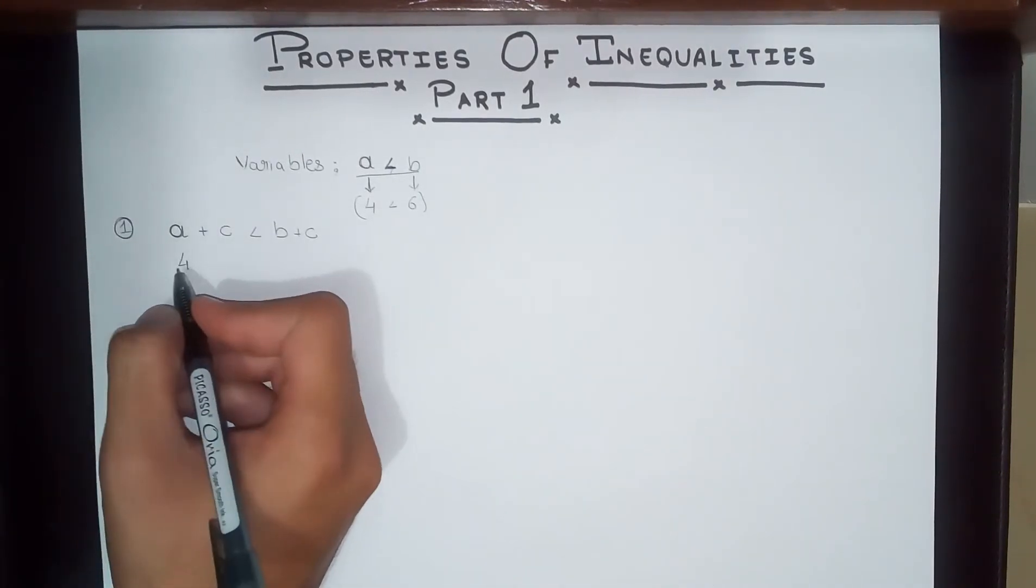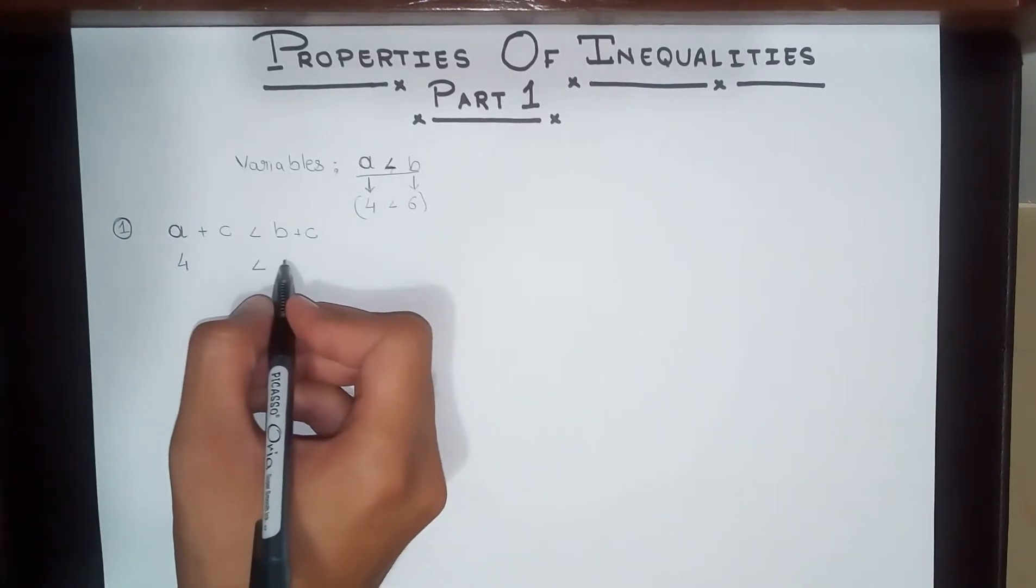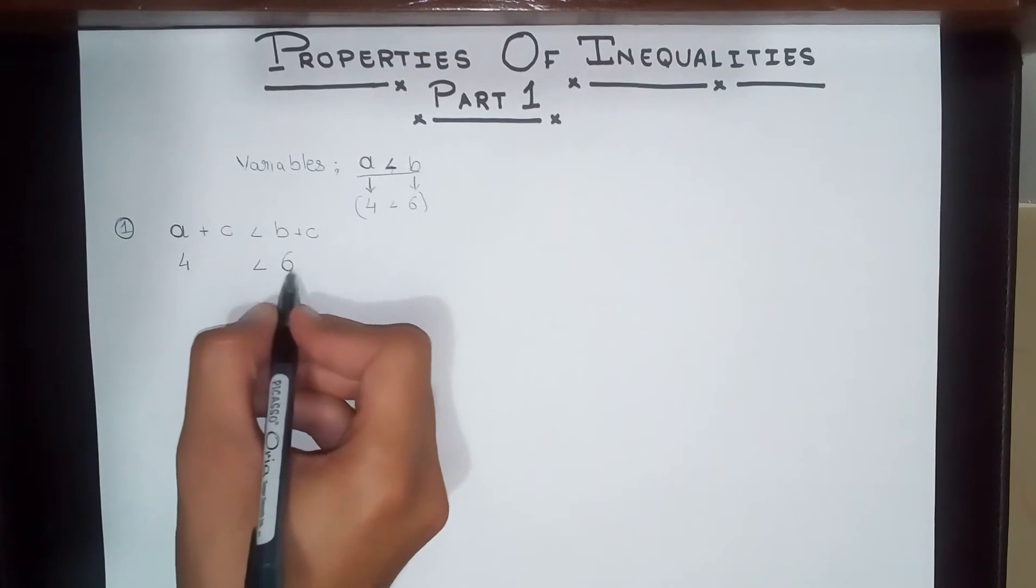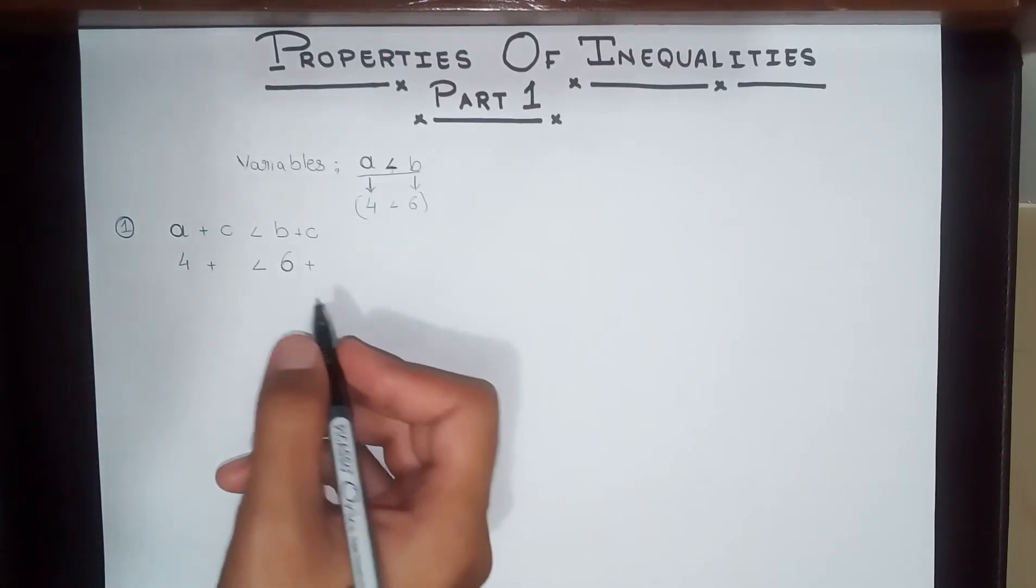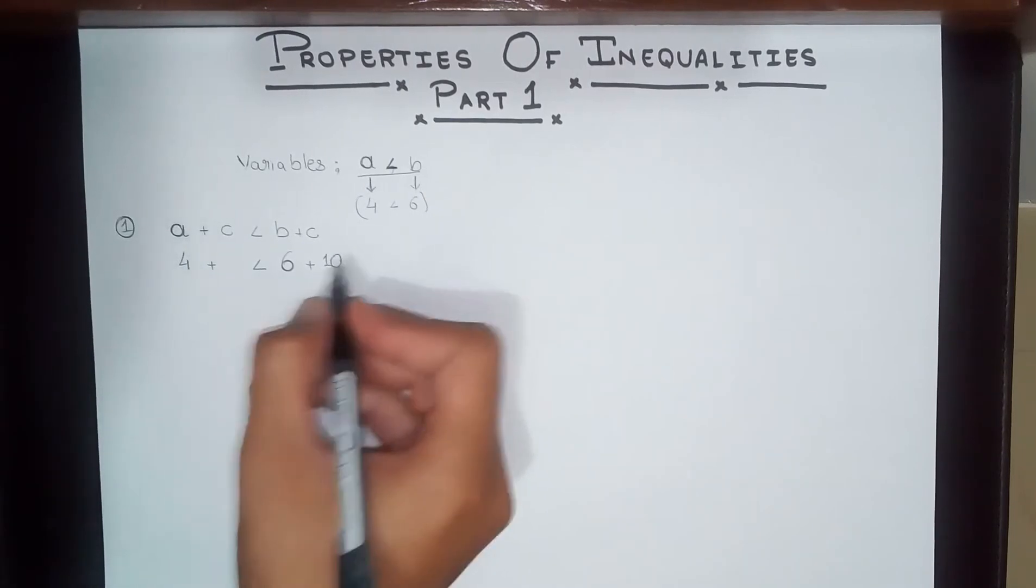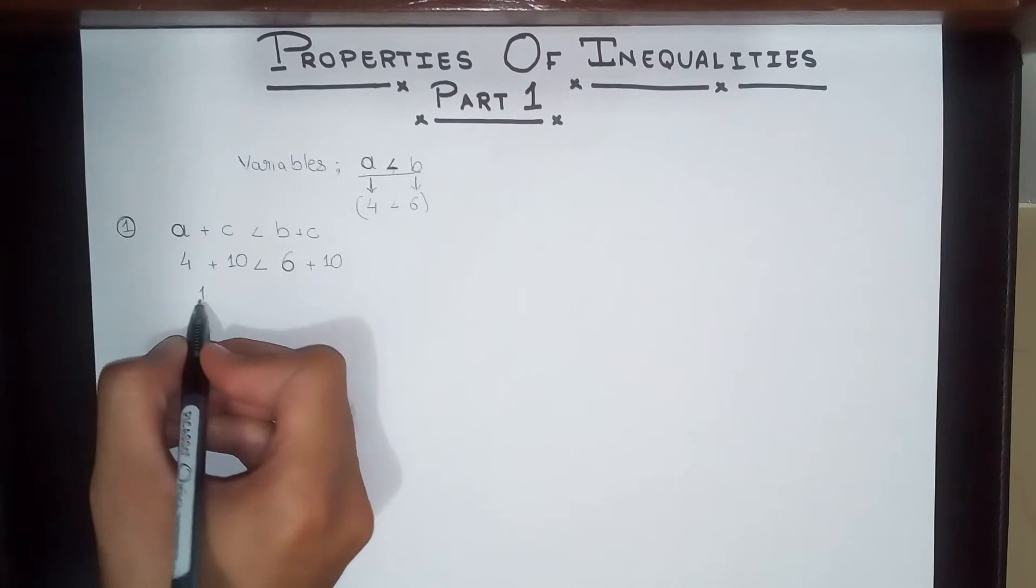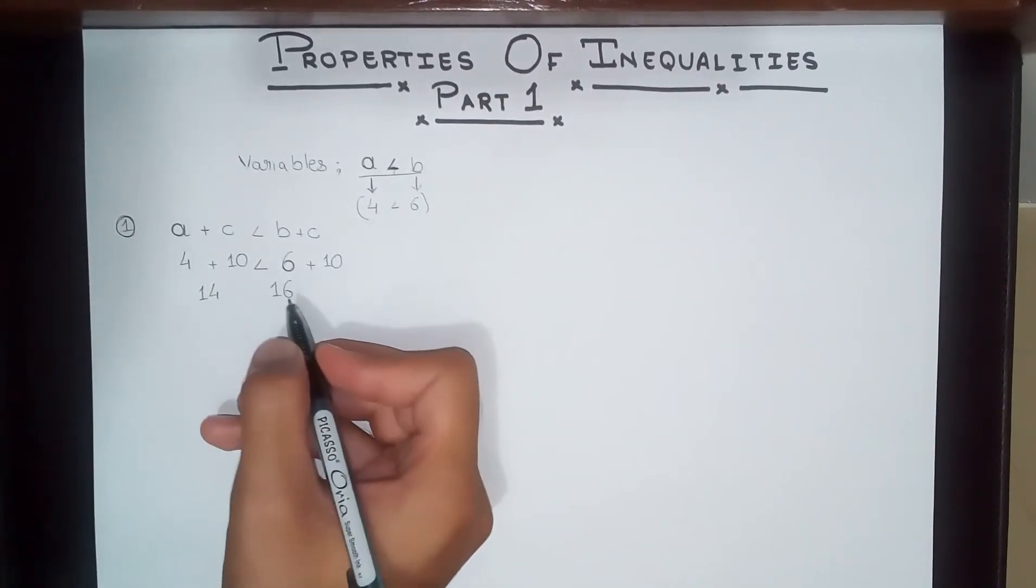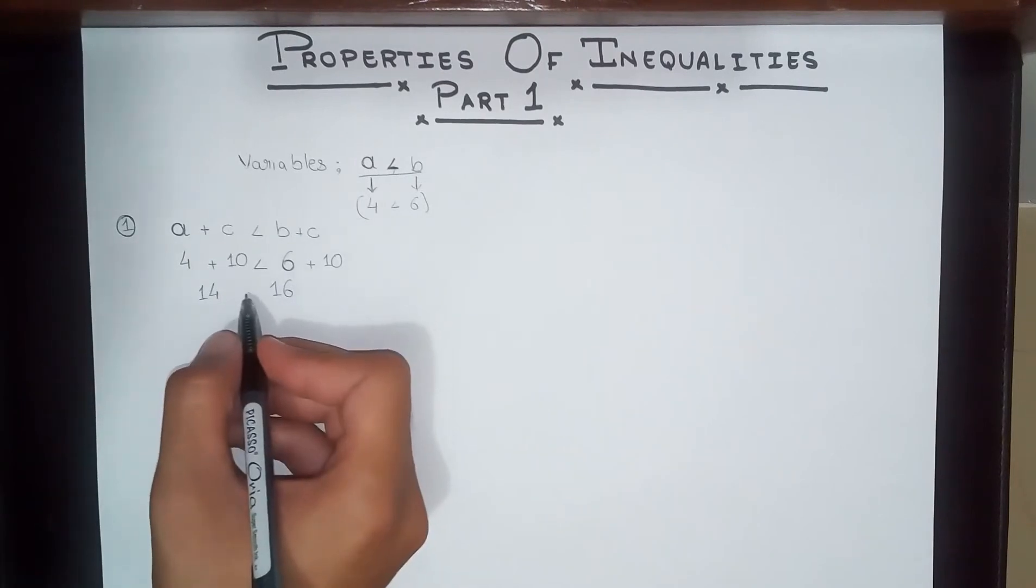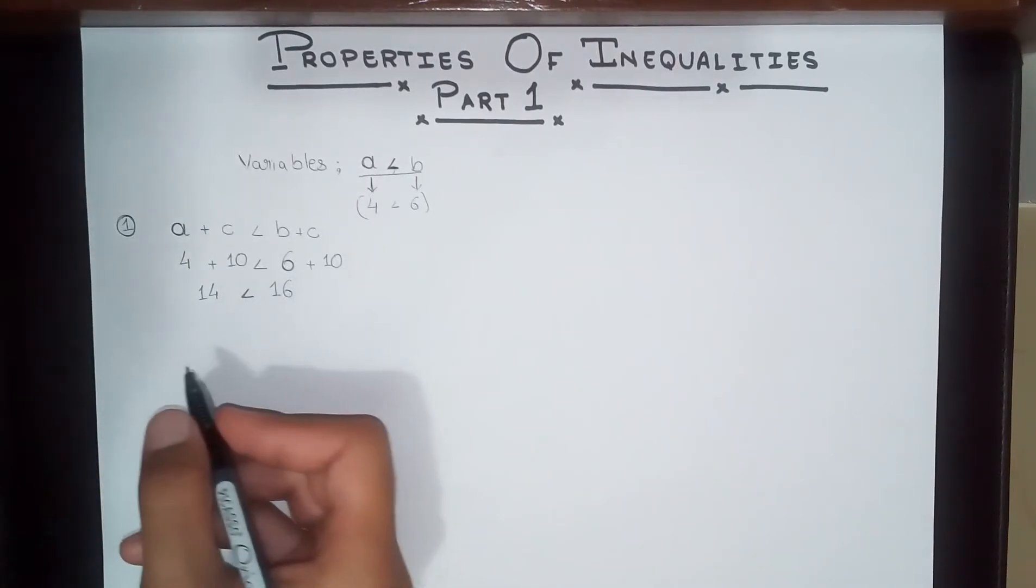We have six and we're going to be adding a number C. C can be any number. Let's say we add 10. If we add 10 to both sides, we see 10 plus 4 equals 14, and 10 plus 6 equals 16. So we have found that this is actually true. This is one of the first properties of an inequality.